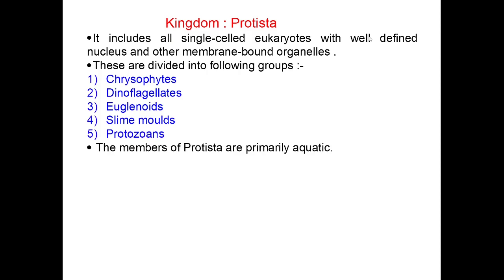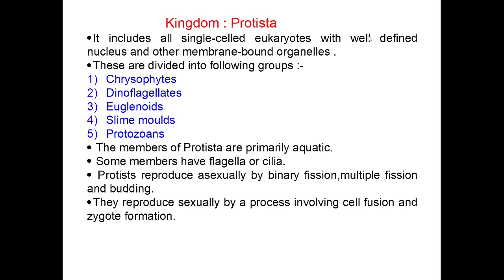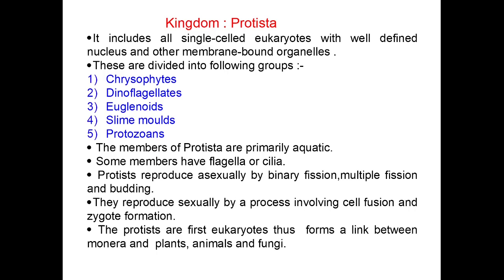The members of Protista are primarily aquatic. Some members have flagella and cilia. Protists reproduce asexually by binary fission, multiple fission, and budding. They reproduce sexually by a process involving cell fusion and zygote formation. The Protists are the first eukaryotes, thus forming a link between Monera and plants, animals, and fungi.